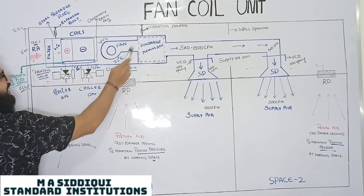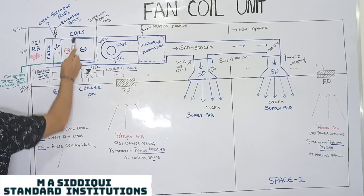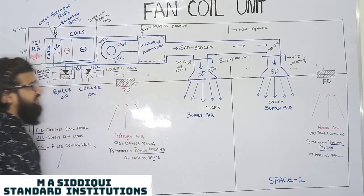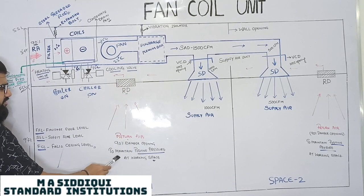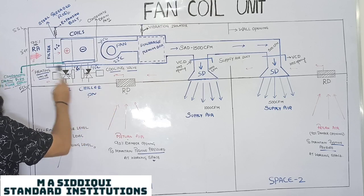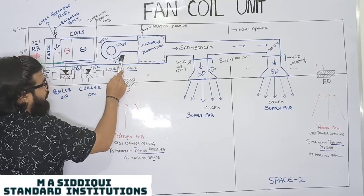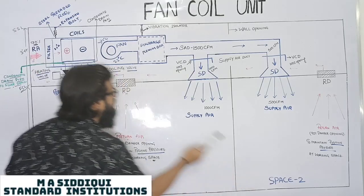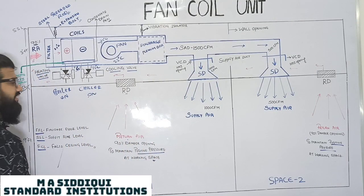This is being provided by your fan coil unit. Your fan coil unit has a filter section, a coil section, a blower section. When this blower starts working, it sucks the return air from space 1 and space 2. You can watch here, return air is going via return diffuser to return air plenum of FCU.